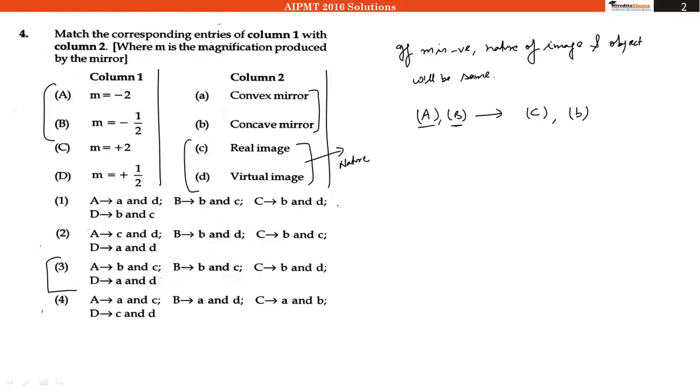In all other you can see that there are the contradictions. So A has B and C and B also have B and C. So only option 3 this is the correct match.